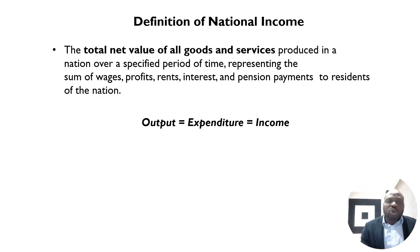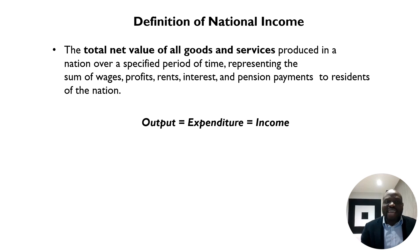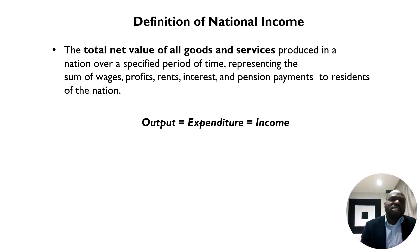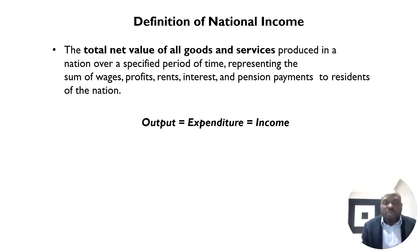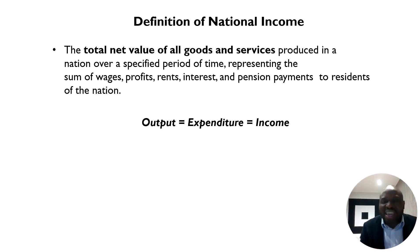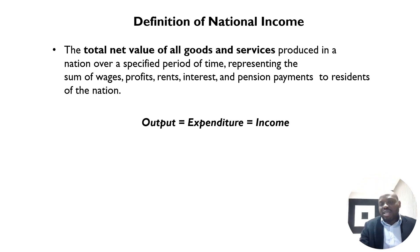Now we look at national income and differences in economic development. National income is defined as the total net value of all goods and services produced in a nation over a specified period of time — representing the sum of wages, profits, rents, interest, and pension payments to residents. It includes total outputs, expenditure, and income, and is usually calculated yearly.